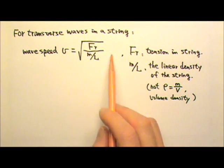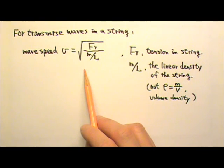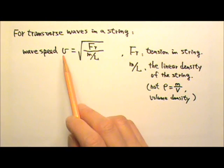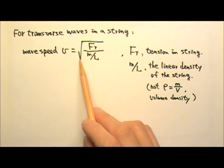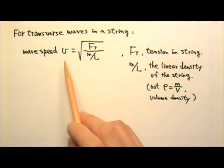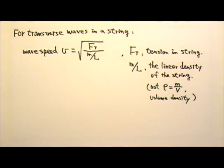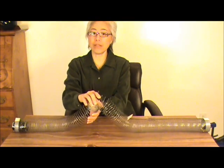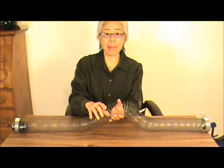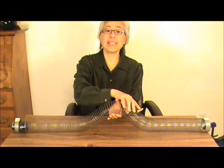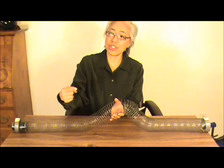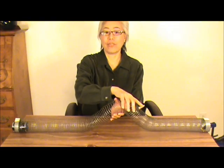I'm not going to derive this equation, but let's look at it qualitatively. The larger the tension in the string, the faster the speed. In order for a wave to propagate, this disturbance has to move down the slinky. The higher the tension in the slinky, the stronger the force pulling the next segment upward. F equals MA, so the larger the force, the larger the acceleration. Therefore, the faster the wave speed down the slinky.